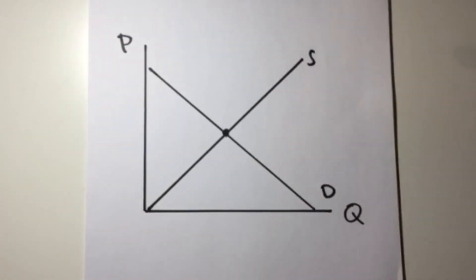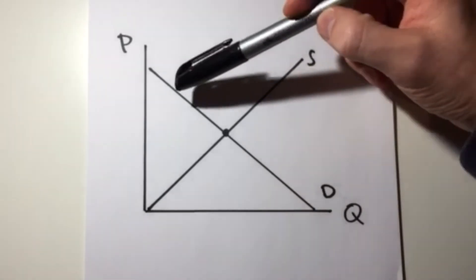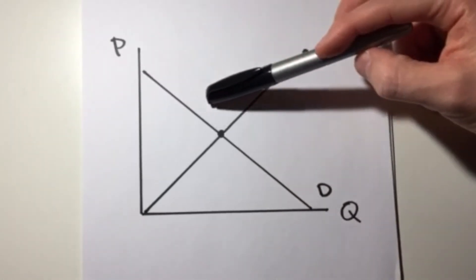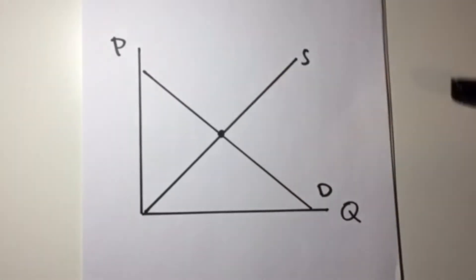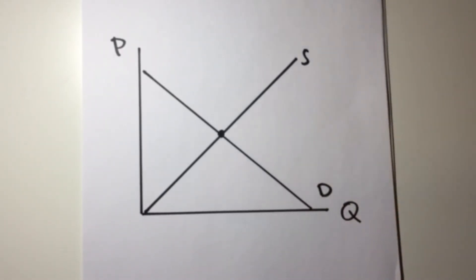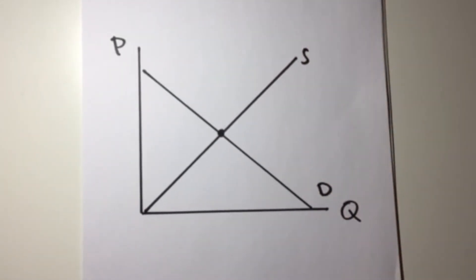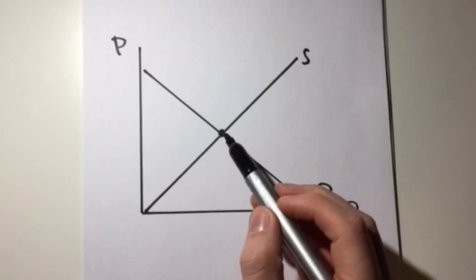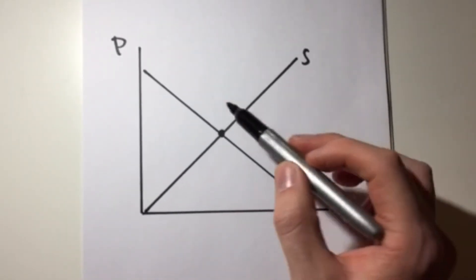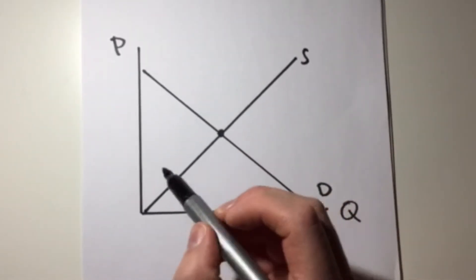So now we know why we're not going to end up in a stable position when our price is higher than the equilibrium point — because in that case, we're going to be in excess supply and forces are going to push the price down. Now let's look at the situation where we're not at our equilibrium, but instead of being up here, we're down here.